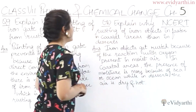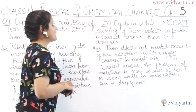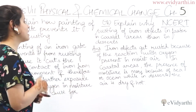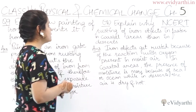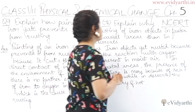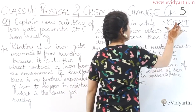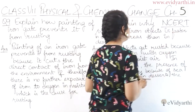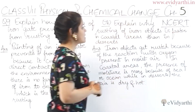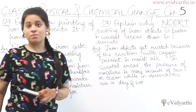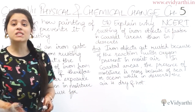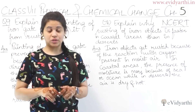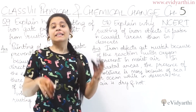Next question: explain why rusting of iron objects is faster in coastal areas than in deserts. They are asking why rusting of iron objects is more in coastal areas than in deserts.